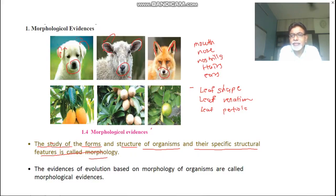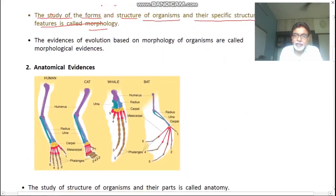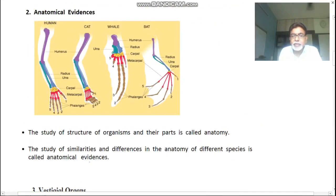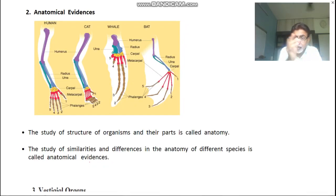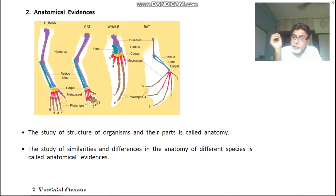The second evidence is anatomical evidence. What is anatomical evidence? Anatomy is the study of the structure of organisms and their parts — the internal structure of the organism and its body parts. The study of similarities and differences in the anatomy of different species is called anatomical evidence.